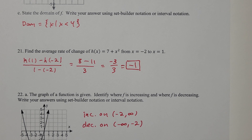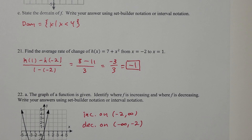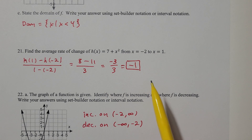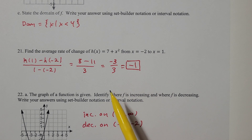We'll start on problem 21. We want to find the average rate of change of h(x) = 7 + x² from x = -2 to x = 1. We always want to take f(b) minus f(a) divided by b minus a.